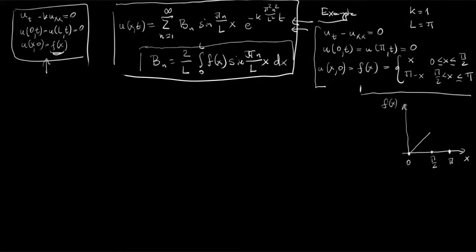The function f(x) has its maximum at π/2. Note that at x=π/2, this function is continuous but not differentiable — it has a corner. So that is our problem: solve the heat equation with this triangular initial profile.